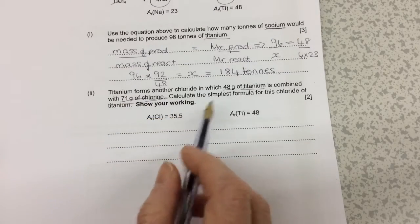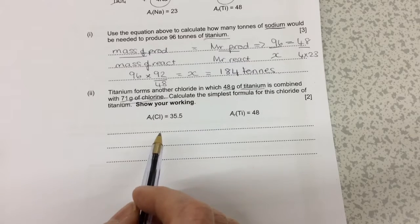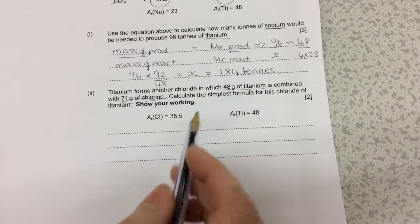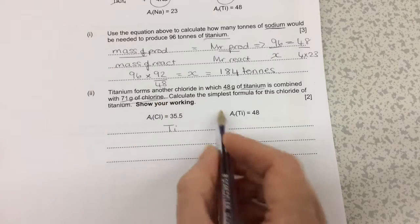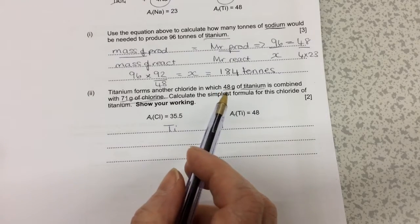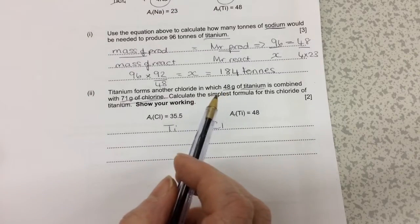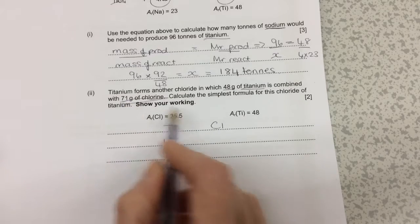From the question, I'm going to write down the symbols of the elements to start with. I've got titanium, which is Ti, and chlorine, which is Cl. Next step is to write down the amount from the question. I've got 48 grams of titanium and 71 grams of chlorine.